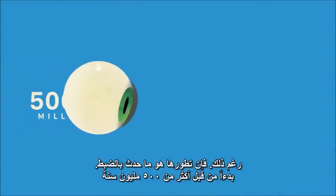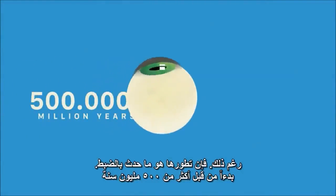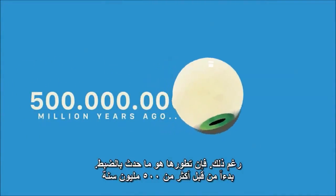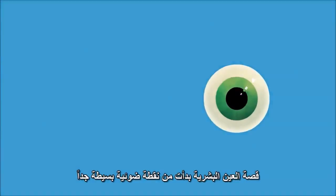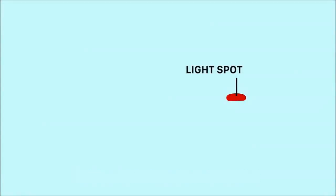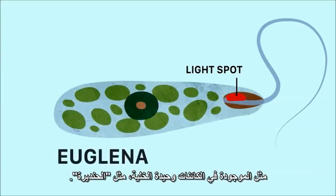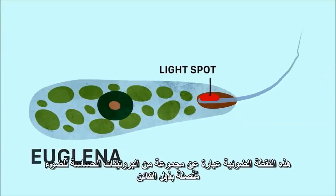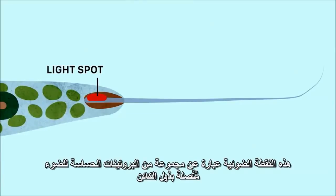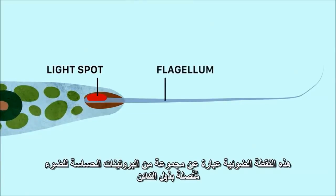And yet, that is exactly what happened, starting more than 500 million years ago. The story of the human eye begins with a simple light spot, such as the one found in single-celled organisms like euglena. This is a cluster of light-sensitive proteins linked to the organism's flagellum,